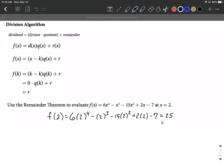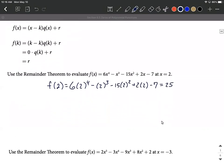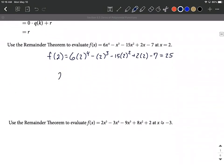So another alternative way to do this is if we're dividing by x minus 2, we can do synthetic division by putting a positive 2 out in front. And then I'm going to list out the coefficients from f of x. So 6, negative 1, negative 15,